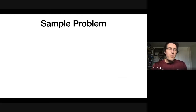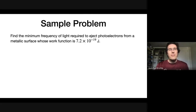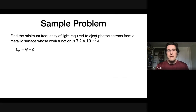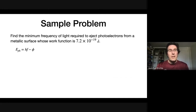So I want to look at a sample problem that uses that earlier equation. The sample problem: find the minimum frequency of light required to eject photoelectrons from a metallic surface whose work function is 7.2 × 10⁻¹⁹ joules. We're going to use Einstein's photoelectric equation. I should mention that the term hf on the right-hand side is actually the energy in the photon — so the energy of one photon is hf. The KE term on the left is the kinetic energy of the photoelectron, not the photon.